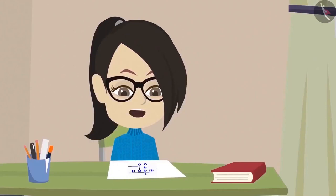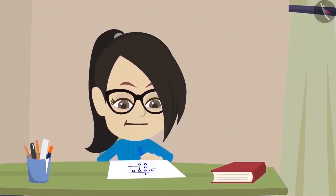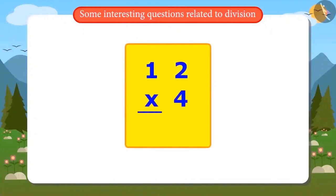Now we must check this and see if the answer is correct. I will multiply 4 by 12 to check: 4 twos are 8 and 4 ones are 4 — the answer came 48. Oh what! The answer should have come to 408. That means I have made a mistake in dividing.